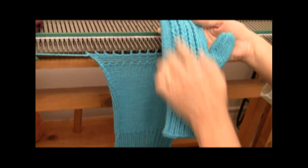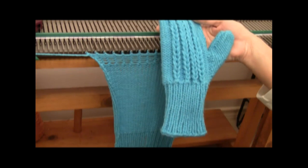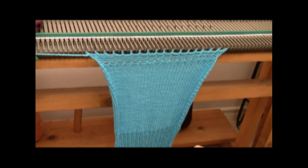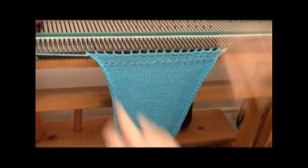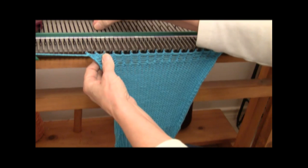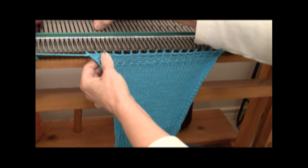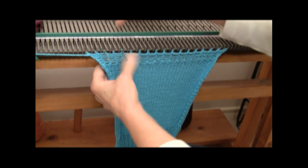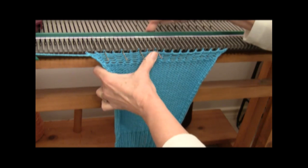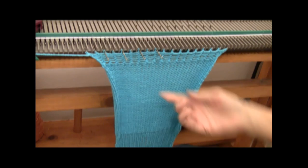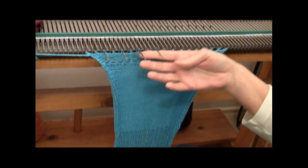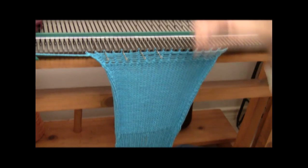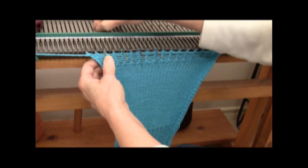Now it's time to make the decorative cables up the top of the hand of the mitten. And what I'm going to do is start with the third stitch from the left, skip a stitch, get the fifth, the seventh, and the ninth. And these are the needles that I'm going to run the stitches down to make this detail.